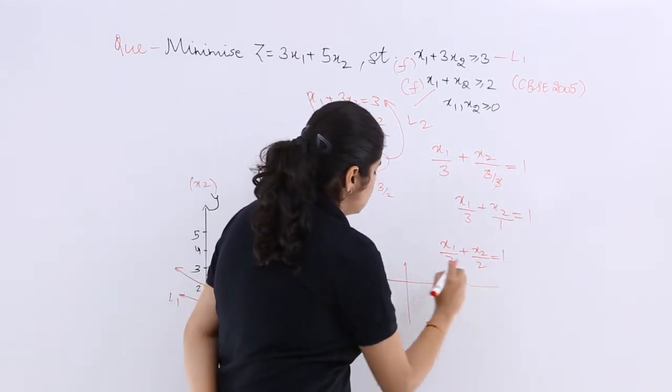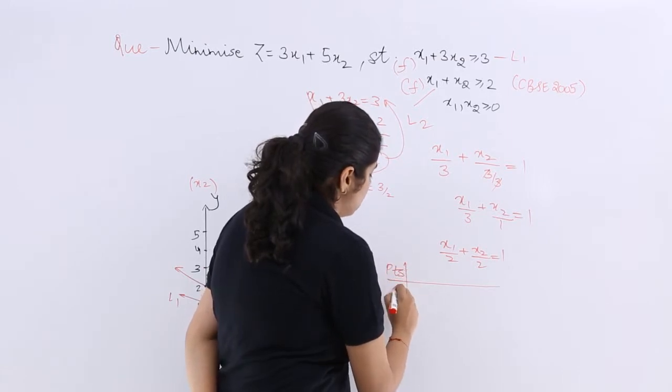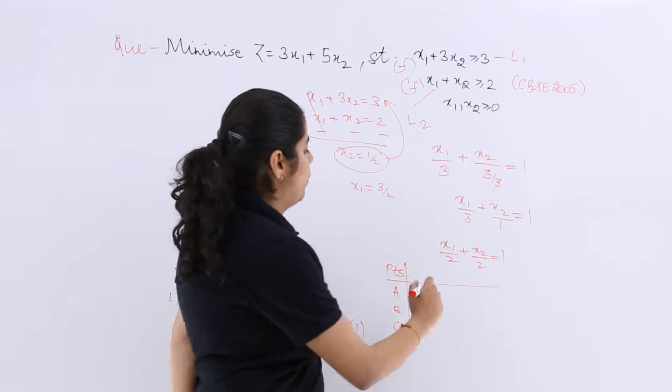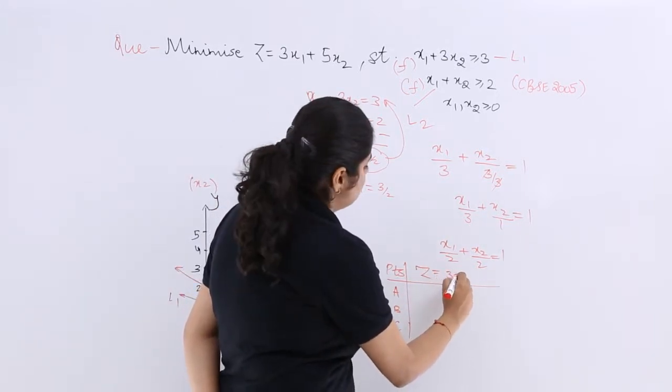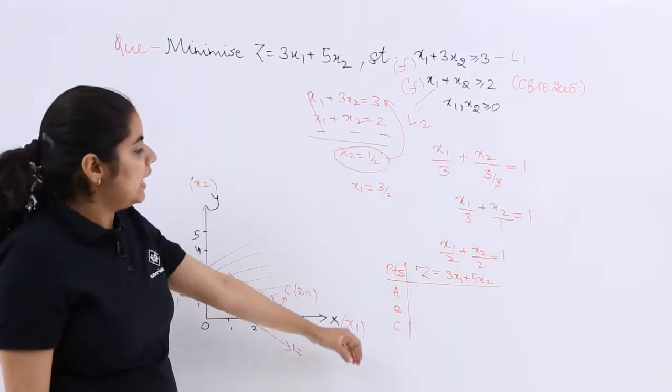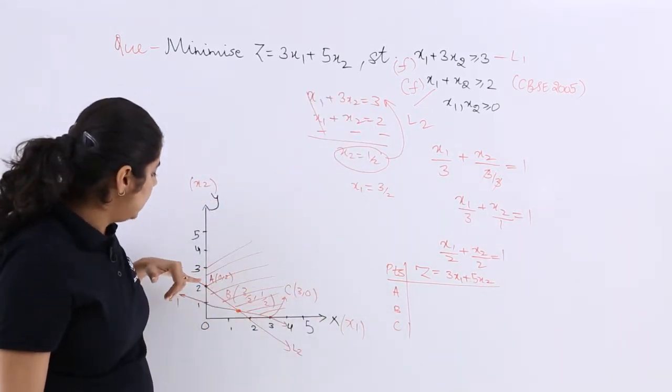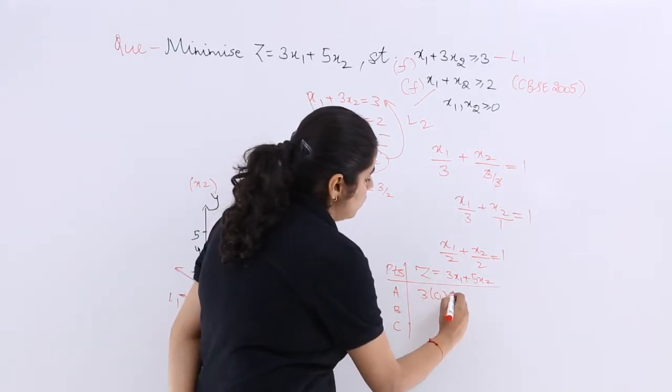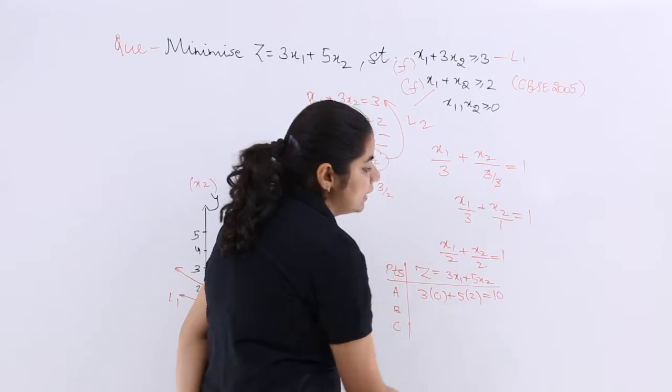Now, let me see. These are the points. This is your A, this is your B, this is your C. Where is your Z? Z is here, which is 3x1 plus 5x2. What is A? A is nothing but a point which says 0, 2. So 3 times 0 plus 5 times 2 which is 10.